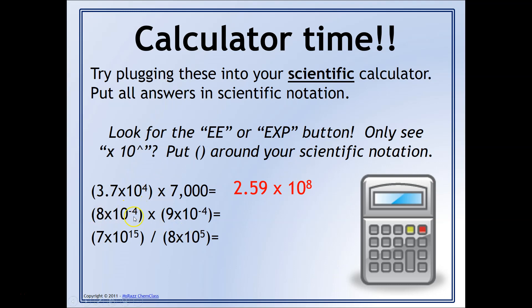Let's try the next example with two numbers in scientific notation. If you're using the EE or EXP button, type in 8, then EE or EXP, then negative 4, then the multiplication sign, then 9, EE or EXP, negative 4. We are not including times ten when using the EE or EXP buttons. If you're using times-ten-to-the-caret, you absolutely need parentheses around both numbers. If you do that calculation correctly, you should get 7.2 times ten to the minus 7.